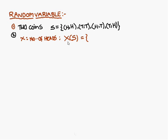x counts the number of heads in each pair. The first pair has two heads, therefore you get two. The second pair has zero heads, therefore you get zero. The third pair has only one head, therefore you get one. The fourth pair also has one head, therefore one only. Already written in set notation.